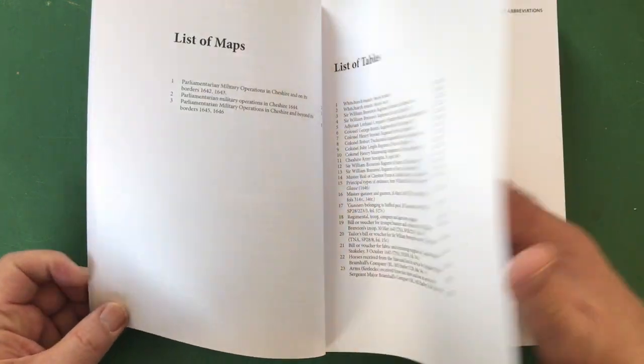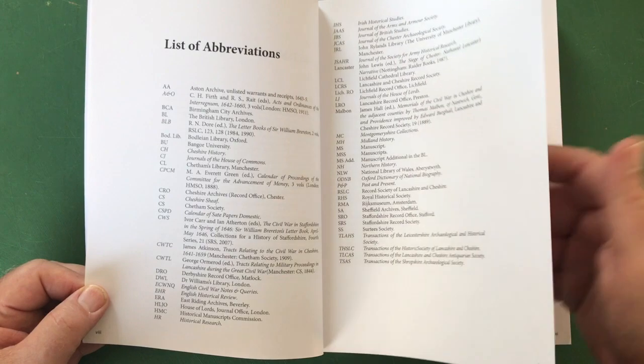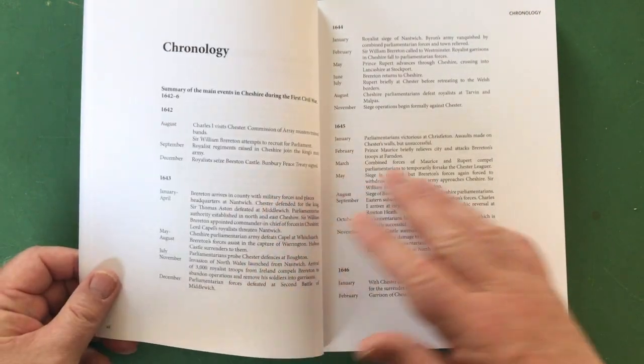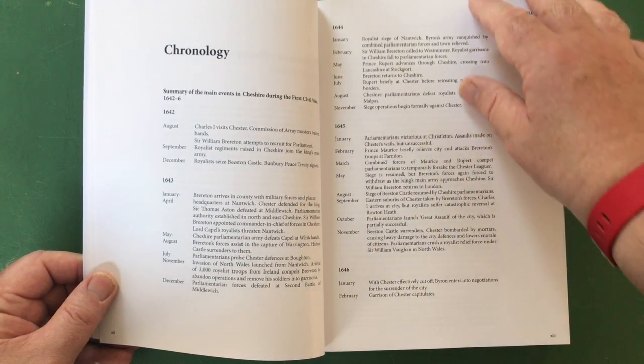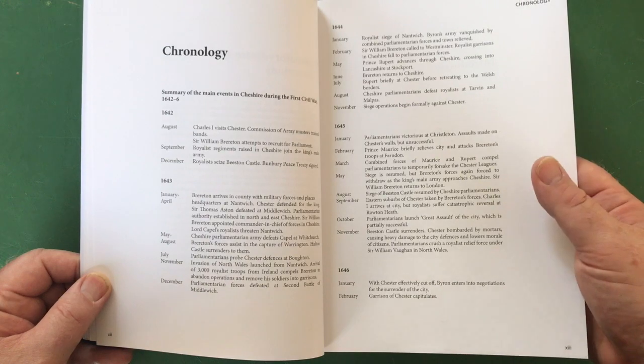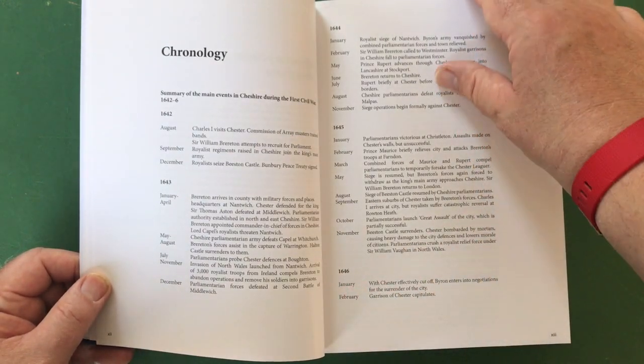There are quite a lot of tables, list of abbreviations and explanatory notes and conventions. There's a chronology of the war as it affected Cheshire starting in 1642 and going through to 1646.